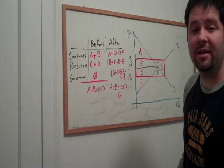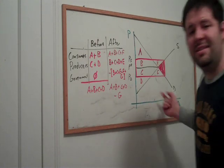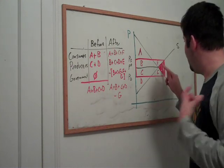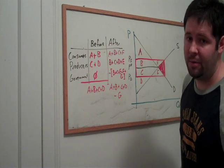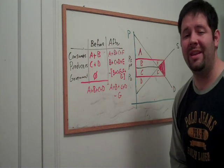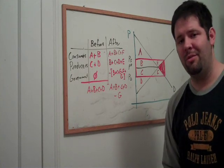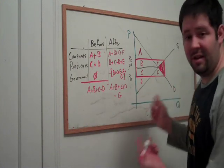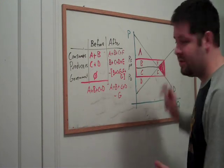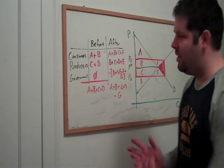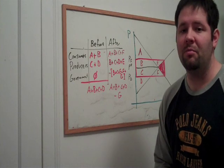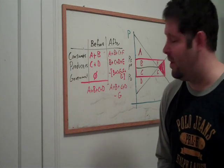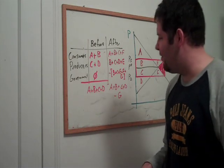What we can do is we can go ahead and shade in the area G. And that represents our deadweight loss. Now this area represents deadweight loss because these are units that were actually traded for which the marginal cost, as represented by the supply curve, exceeds the marginal willingness to pay. These are units that from a social perspective shouldn't have been produced. But because the government subsidized the production and consumption of these goods, these goods were produced and consumed. Even though in total, from a social perspective, they didn't produce as much benefit. And actually they took away from our total surplus.